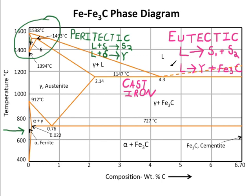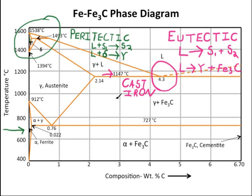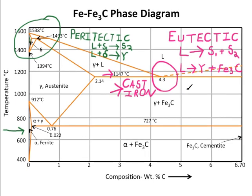The next important reaction on this phase diagram is a eutectic reaction, occurring at 1147 degrees Celsius. A eutectic reaction is when a liquid cools down into solid one plus solid two. In this case, the liquid cools into gamma plus carbide. Cast irons are found in the compositional vicinity of this region. The solubility limit of carbon in austenite is 2.14 weight percent carbon. The focus of this video, however, is the eutectoid reaction.